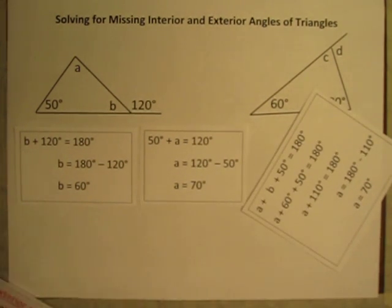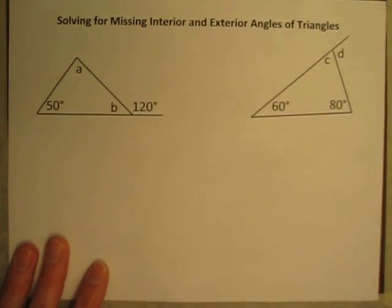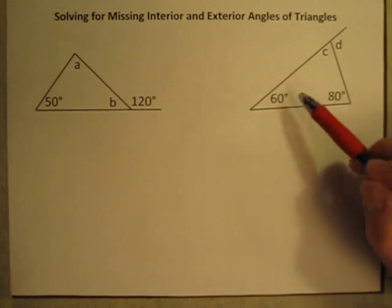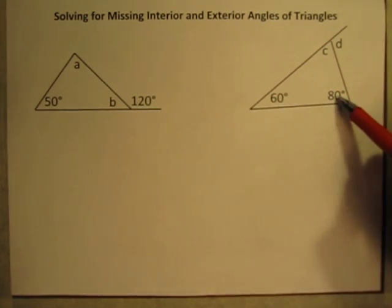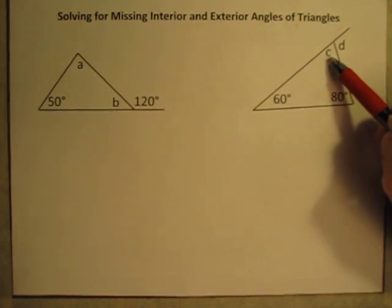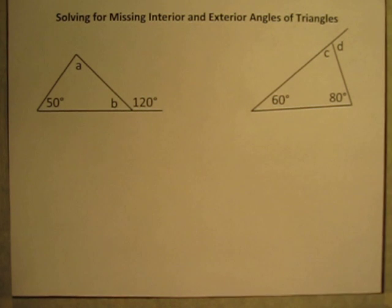Let's try the next one. In the next problem, over here, we have two interior angles that we know, 60 degrees and 80 degrees. That interior angle, angle C is unknown, and the exterior angle, angle D is unknown. And again, we could start this in multiple ways.